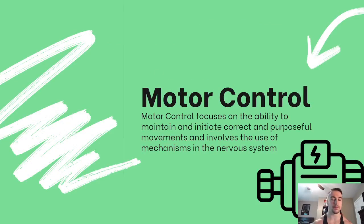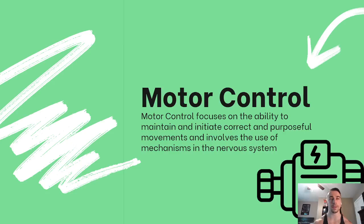Motor control focuses on the ability to maintain and initiate correct and purposeful movements, and involves the use of mechanisms in the nervous system. A lot of motor control comes from the nervous system. This goes hand in hand when we're performing exercises and learning proper form — that is part of motor control, learning and maintaining that correct movement pattern driven by the nervous system.